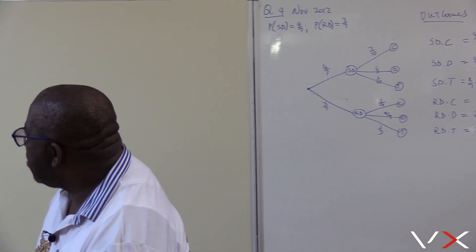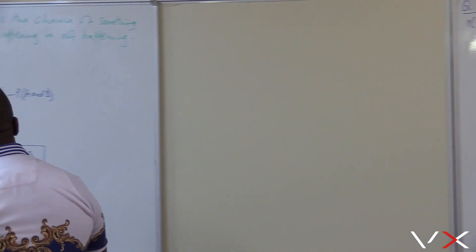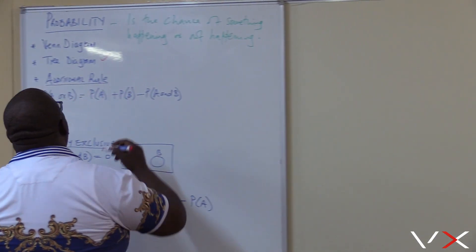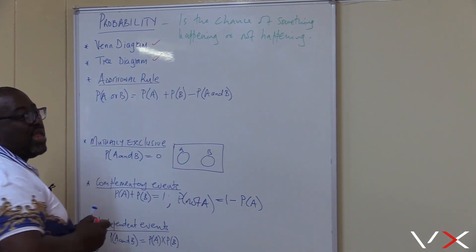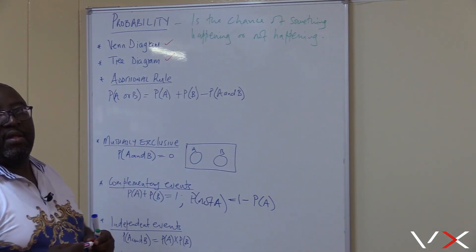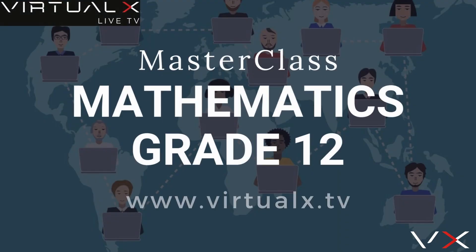Now that we are through with the tree diagram, I want us to go to the next diagram called the Venn diagram.